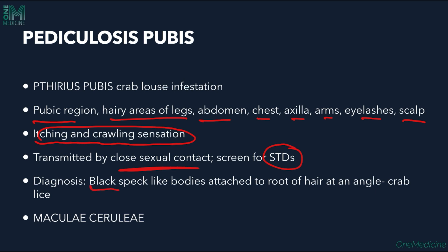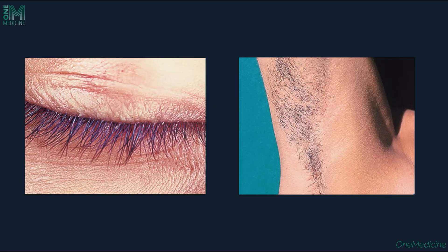Diagnosis is by seeing black speck-like bodies attached to the root of the hair at an angle. Also, maculae ceruleae — grey-blue macules seen on the medial part of the thigh and groins — can be observed due to altered blood pigments. These are the nits on the eyelashes and black specks visible in the axilla.